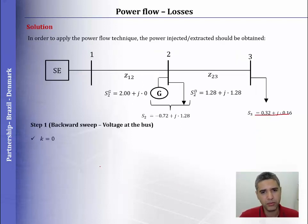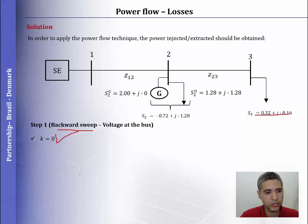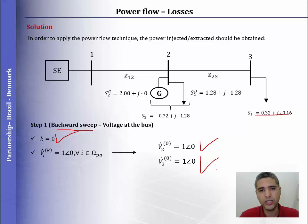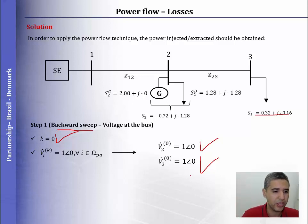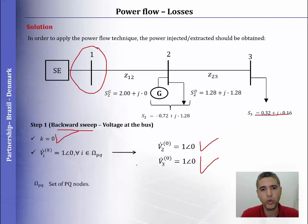Starting the backward-forward method, we begin with the backward sweep, which means going from the last bus to the first bus. The counter should be equal to 0 at the first iteration. We initiate the voltage at bus 2 and bus 3 equal to 1, because the voltage at the substation is 1. One common rule is to use the same value of the voltage at the substation.